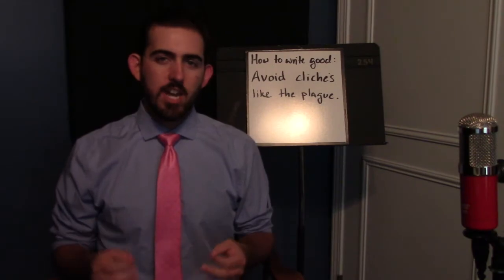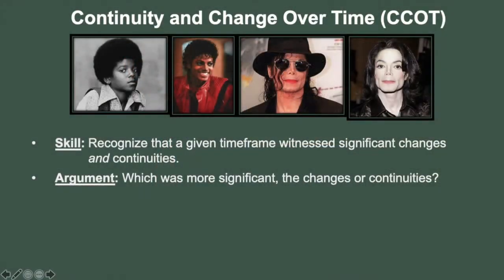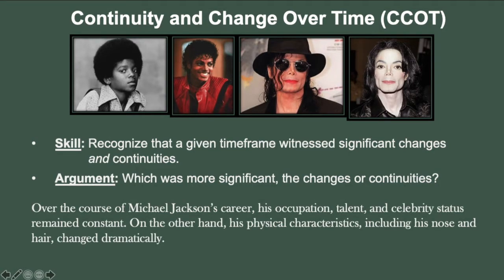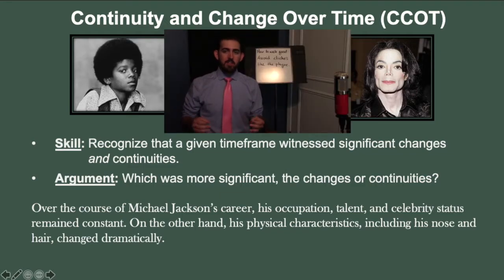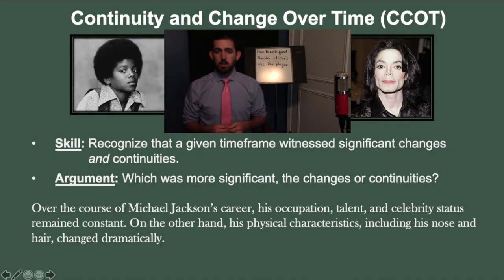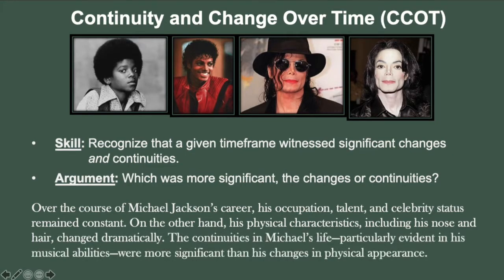For a continuity and change over time, or CCOT essay, you will need to show that during a given time period, we can observe things that changed but also things that stayed the same. For example, over the course of Michael Jackson's life, we saw his occupation as a pop star, his talent as a dancer, and his celebrity status all remain fairly consistent or continuous. On the other hand, his physical characteristics like his nose and hair changed dramatically. So now that I've demonstrated the skill, I need to argue which was more significant — the continuities or the changes. For this example, I might add: 'The continuities in Michael's life, particularly evident in his musical abilities, were more significant than his changes in physical appearance.'